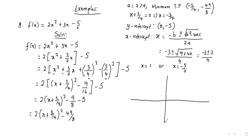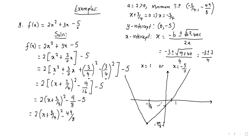Now we have everything: x-intercepts, y-intercept, and turning point, so we can sketch. We said it's minimum, so the turning point is at negative 3 over 4, comma, negative 49 over 8. The curve goes up both sides: this side crosses at 1, the other side crosses at minus 5 over 2. It's a quadratic curve — make sure it looks like a curve, not a box.